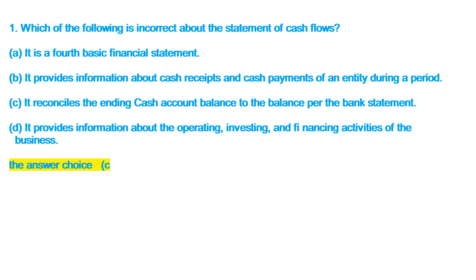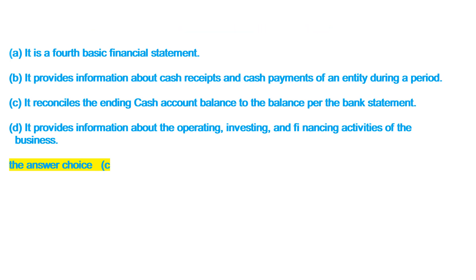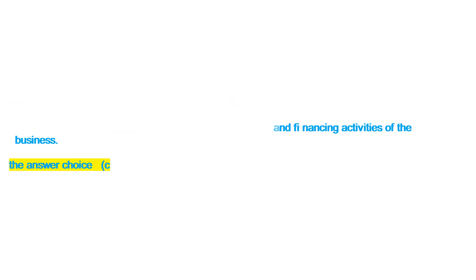Question 1. Which of the following is incorrect about the statement of cash flows? A. It is a fourth basic financial statement. B. Information about cash payments of an entity during a period. C. It reconciles the ending cash account balance to the balance per the bank statement. D. It provides information about the operating, investing, and financing activities of the business. The answer is choice C.